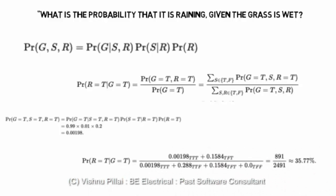You can consider different cases: grass is wet, sprinkler is on, rain is there - probability is 0.0198. Similarly, grass is wet, sprinkler is off, rain is on - probability is 0.1584. Grass is wet, sprinkler is on, rain is false - probability is 0.288. You compute all these probabilities.